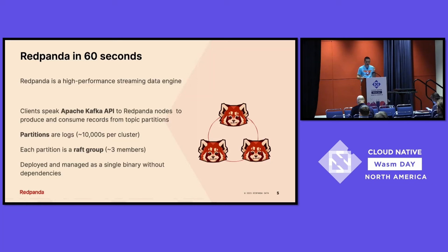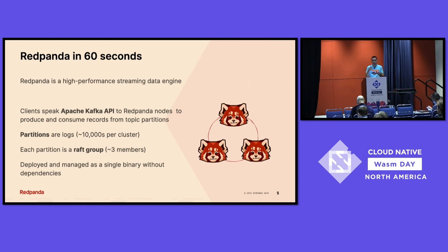First, what is Red Panda in 60 seconds? Red Panda is a high-performance data streaming engine. We speak the Apache Kafka API. If you're not familiar with Kafka, think of the simplest primitive: it's a log. You can produce to the end of that log, and then you can consume from some offset in that log to the end. It uses a message broker to power a lot of applications, decoupling your producing events from your consuming events. These go into partitions — the smallest level of abstraction — and then you can group those into topics. You get ordering for each log within a single partition, so you can think of a partition as essentially a log.